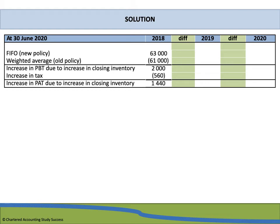For the 2019 financial year, under FIFO the inventory balance is R57,000, while the weighted average balance is R53,000, requiring a R4,000 adjustment to bring inventory up to R57,000. This results in an increase in profit before tax of R4,000, tax of R1,120, and an increase in profit after tax of R2,880.